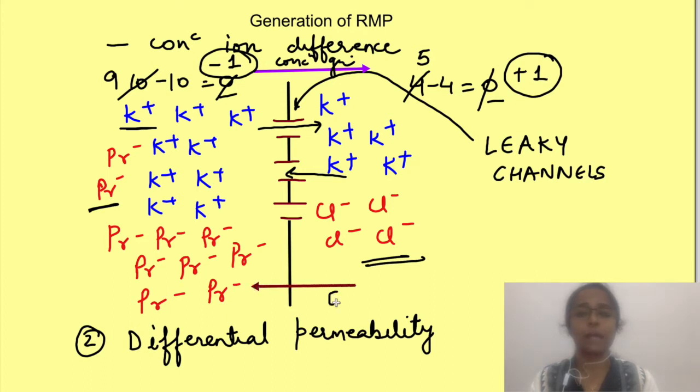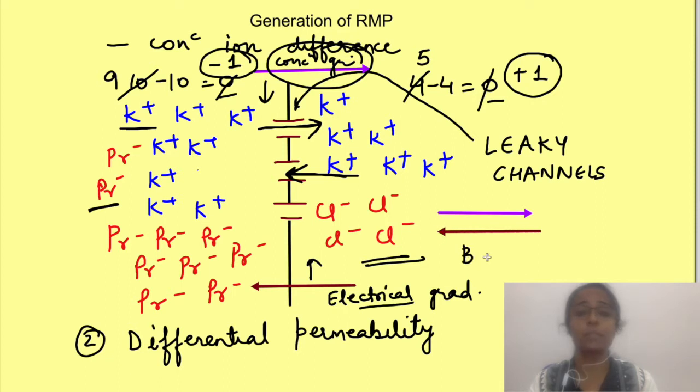This is known as electrical gradient. So because of concentration gradient the ions tend to move from inside to outside, but due to electrical gradient they tend to move from outside to inside. So with time, concentration gradient keeps on decreasing due to increase in number of charges outside while electrical gradient keeps on increasing. After some time a point comes when concentration gradient of the ion is balanced by the equal and opposite electrical gradient.